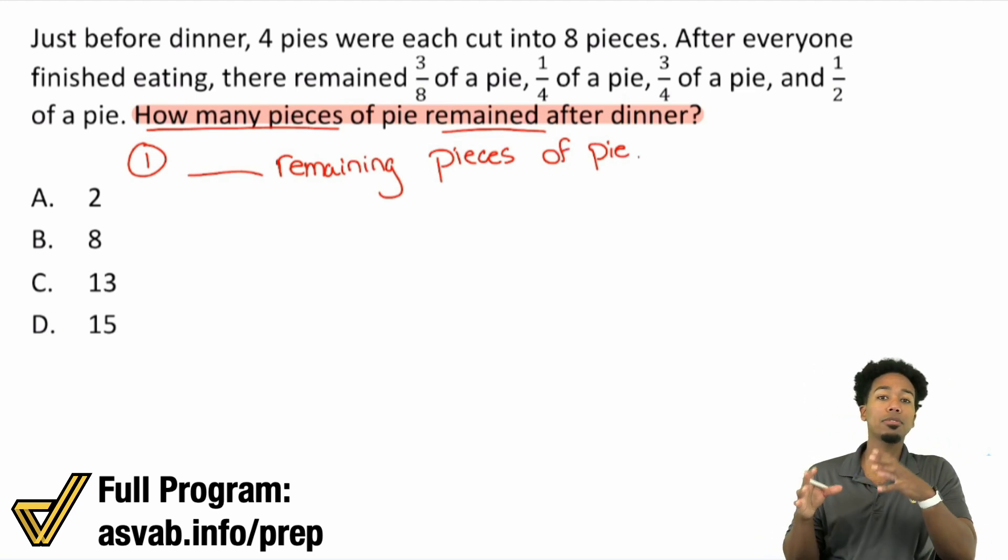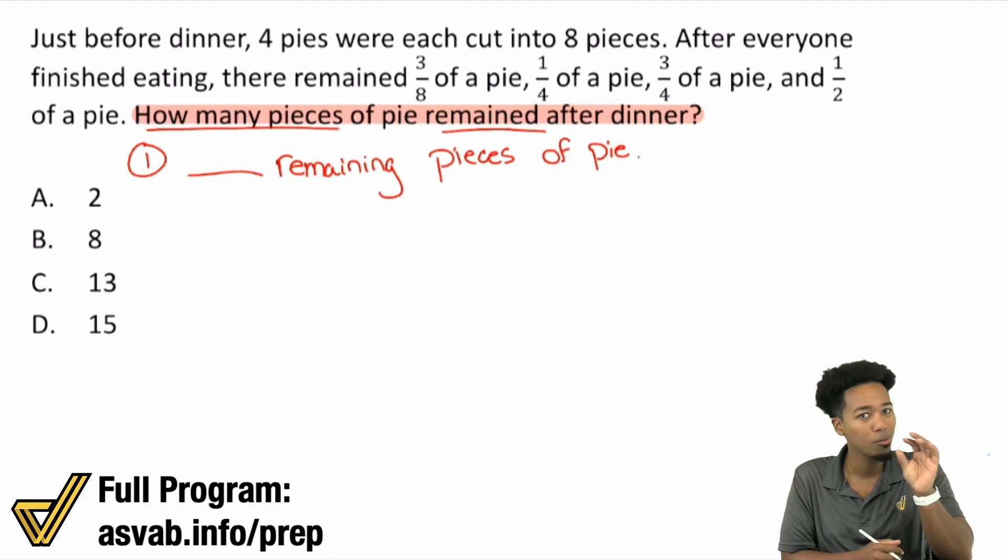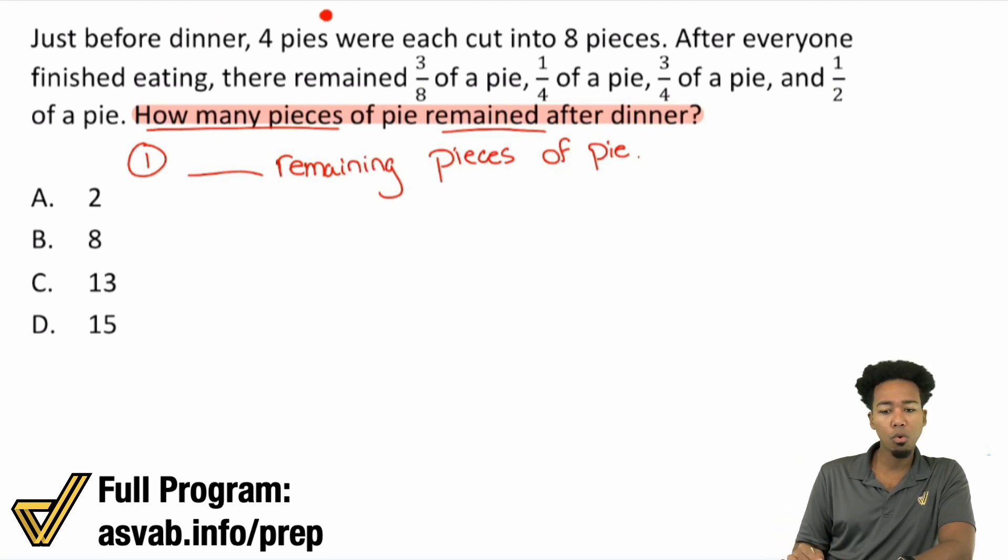So every piece of information that we're going to comb through in the problem, we're going to go ahead and just go through it bit by bit. And the information that we care about only has to do with how many pieces of pie are left. That's it. So let's read through the story briefly, and then we'll collect the numbers. It says, just before dinner, four pies were each cut into eight pieces. After everyone finished eating, there remained three eighths of a pie, a quarter of a pie, three quarters of a pie, and half of a pie.